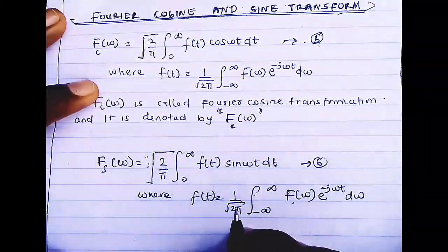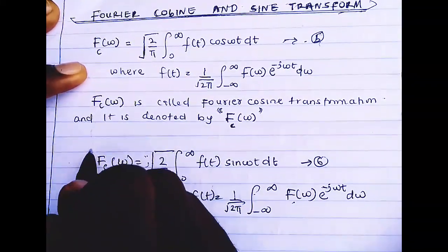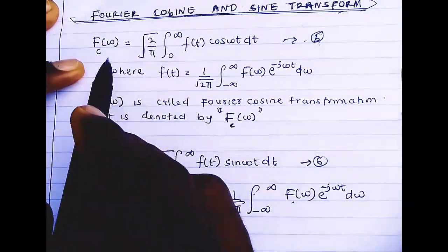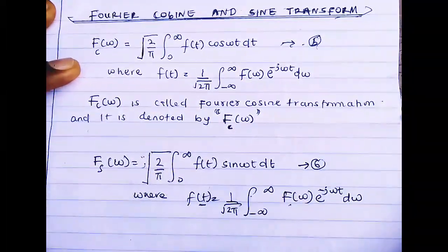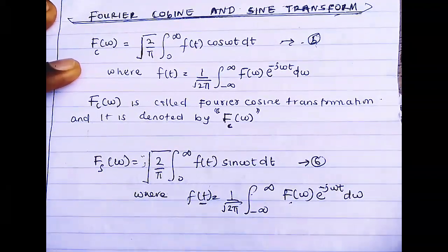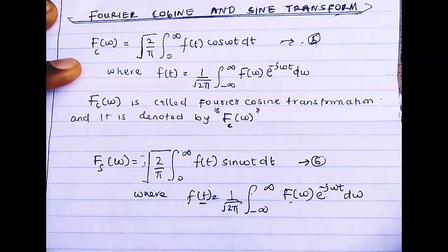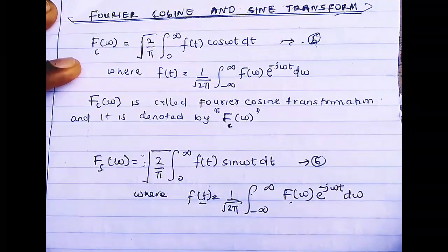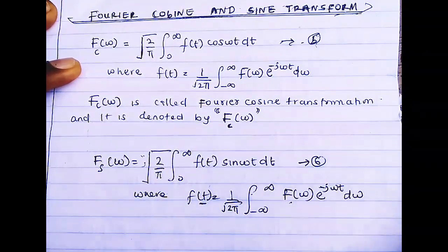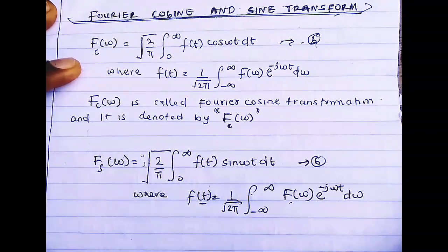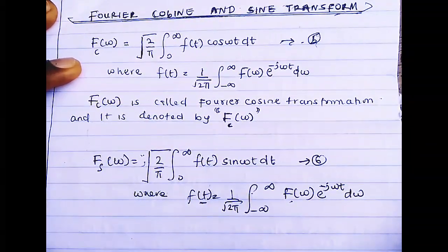This is the Fourier sine transform for a particular function f(t), and this is the Fourier cosine transform for f(t). On the next video we'll look at how to solve some basic examples on Fourier sine and cosine transforms. Thank you for watching — please hit the subscribe button if you like the video and drop a comment.